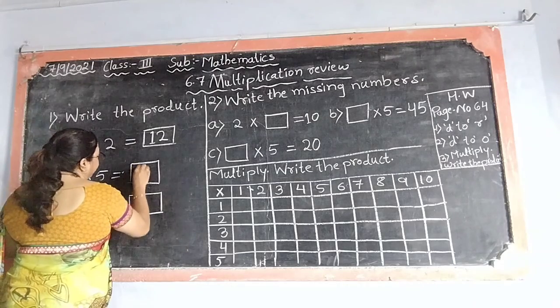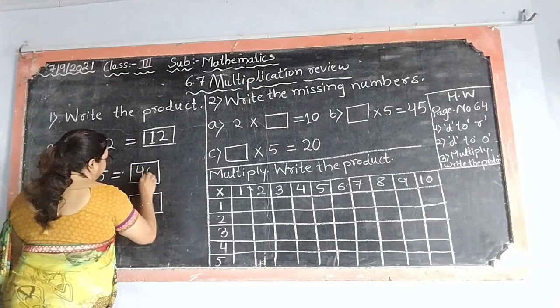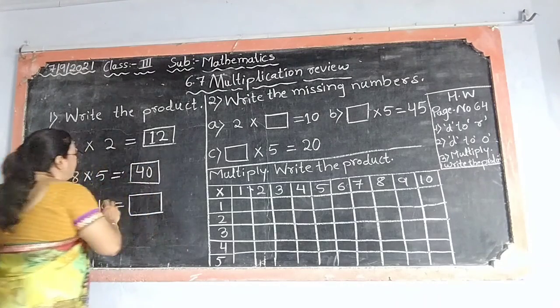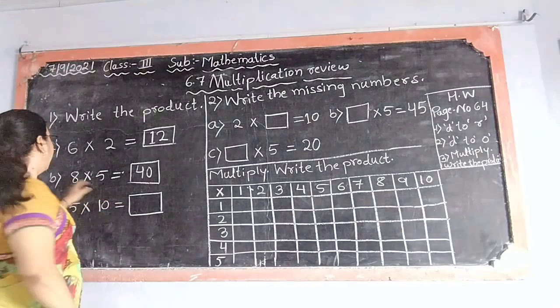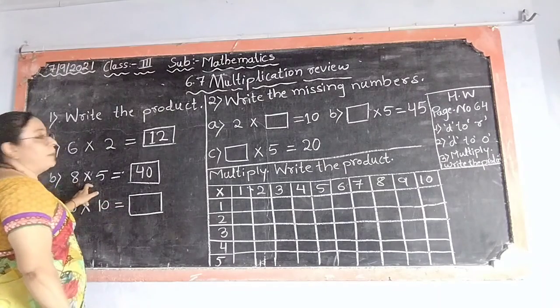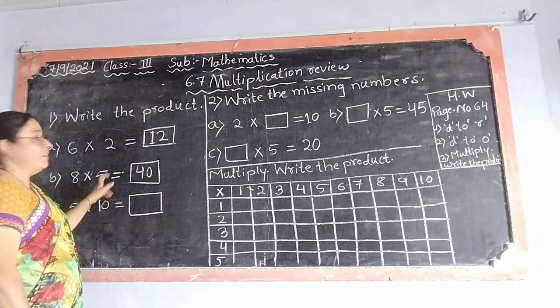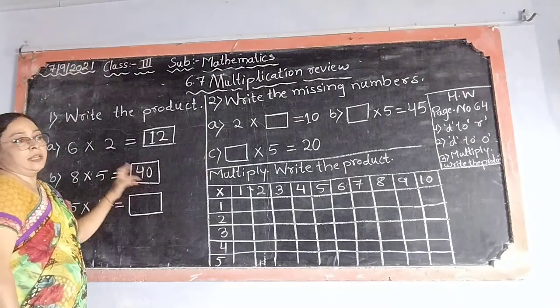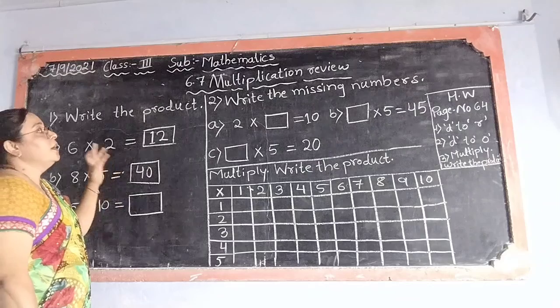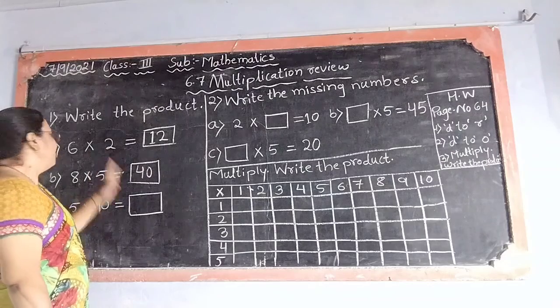The product is 40. So the answer is also 40. 8 multiplied by 5 equals 40. The product is 40.